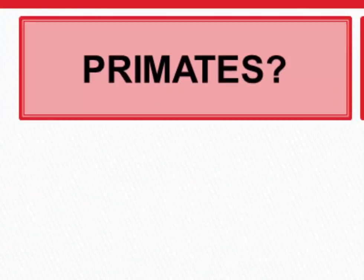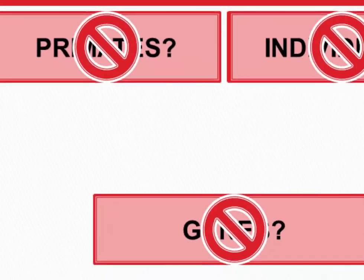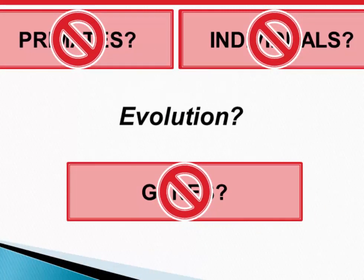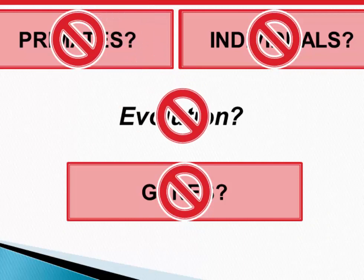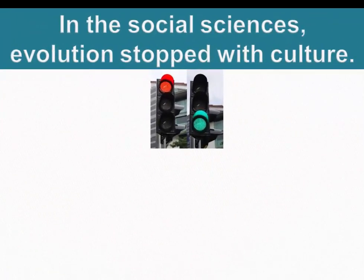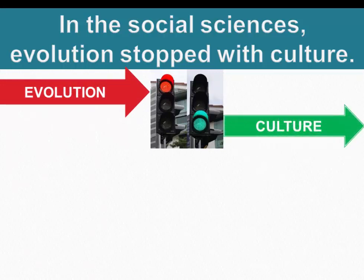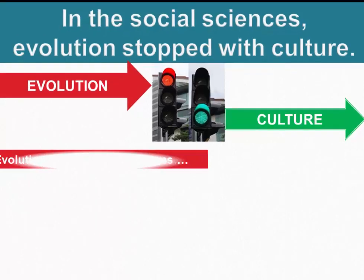In terms of human uniqueness, the question might be, should we pay attention to primates and other mammals and look for continuities with humans? And again, the social science answer has been no, we need to focus only on human beings. And what this adds up to is, should we look at evolution? And again, the answer was no — evolution isn't important to understanding contemporary human behavior. So in the social sciences, evolution stopped with culture. It hit a red light, and the light turned green instead for cultural influences on behavior.